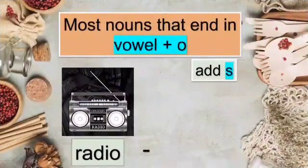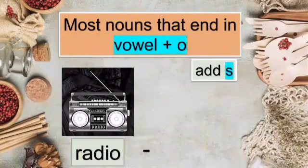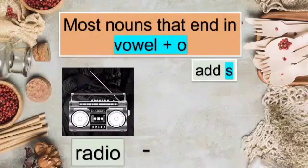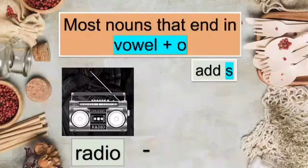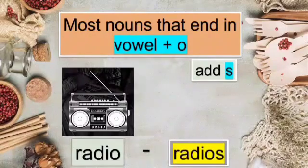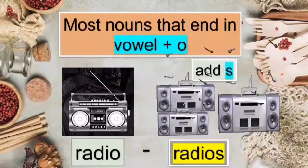Rule 7: most nouns that end in vowel plus O — if a singular noun ends with O and has a vowel before the O, we add S to make it plural. So radio becomes radios. One radio, two radios, three radios.